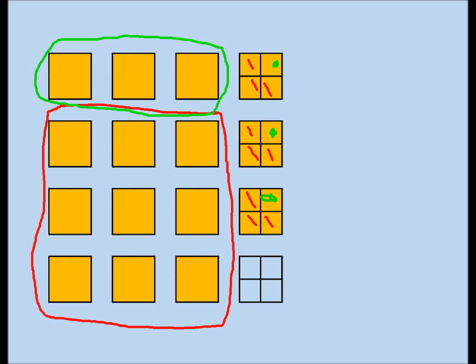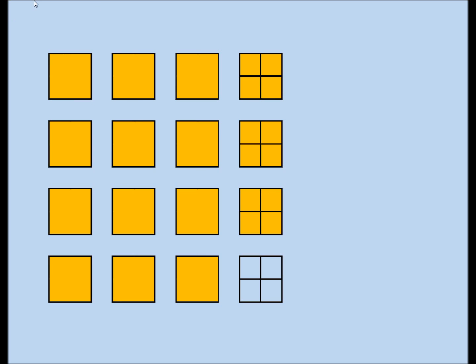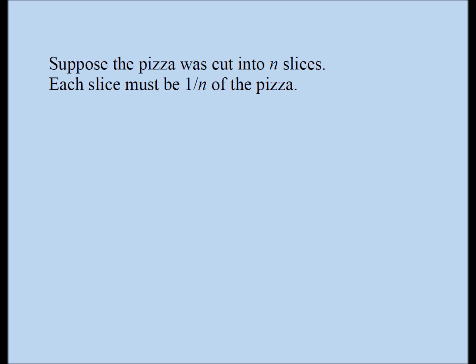Now what we're going to do, we're going to look at the same problem algebraically. Some of us like algebra, some of us like visual. So let's take a look at the solution to the question algebraically. We're going to assume originally he cut the pizza into n slices — it's probably larger than three because he had three slices left over. That tells me each slice must be one over n of the pizza.